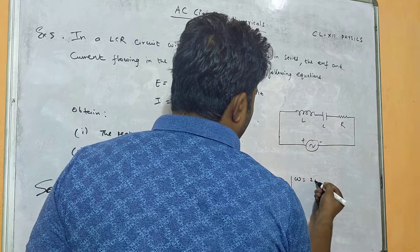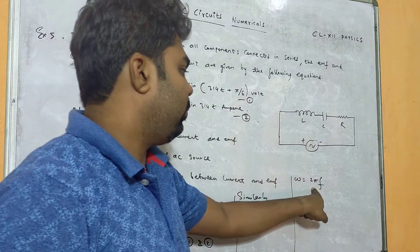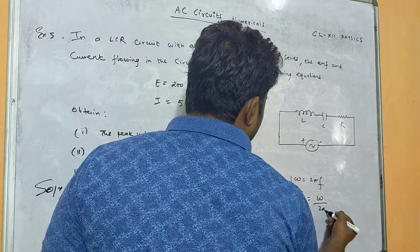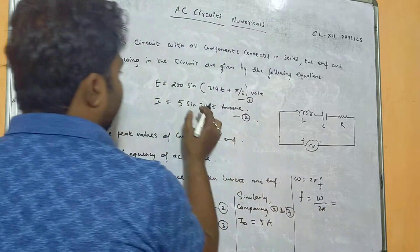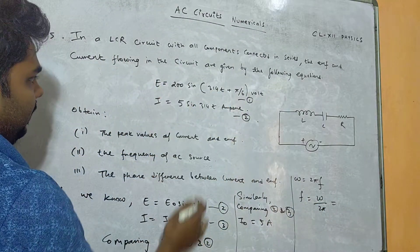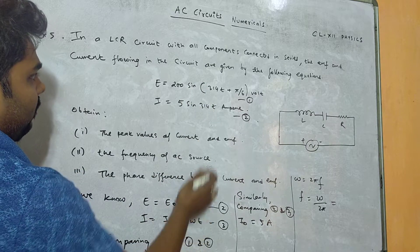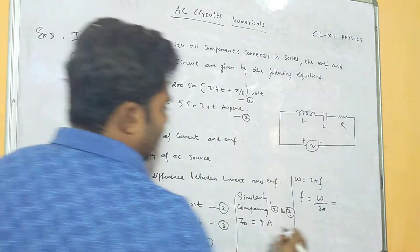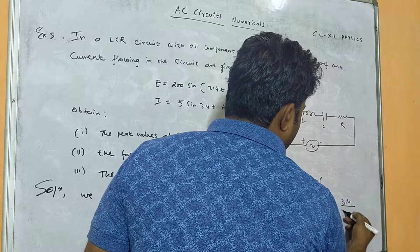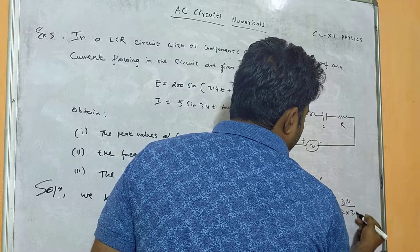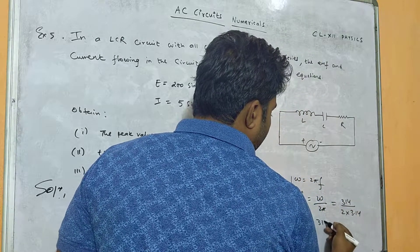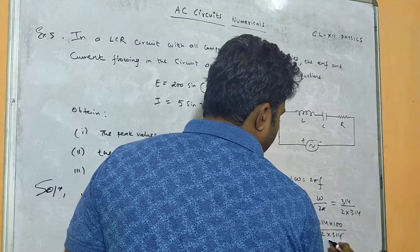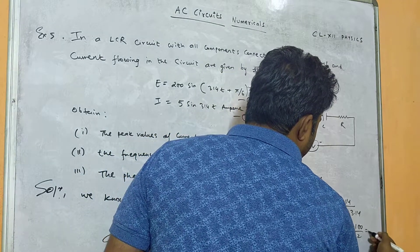After getting the first answer, next we find the frequency of the AC source. We know omega equals 2 pi f, so f equals omega divided by 2 pi. Comparing with the given equations, we see that omega equals 314. Taking pi as 3.14, f equals 314 divided by 2 into 3.14, which gives 314 over 6.28, and the 314 cancels giving 100 divided by 2, that is 50 hertz.